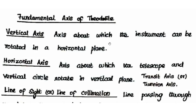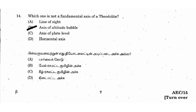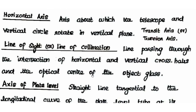The fundamental axes of a theodolite are: (1) Vertical axis — the axis about which the instrument rotates in the horizontal plane. (2) Horizontal axis — perpendicular to the vertical axis, the telescope rotates in the vertical plane about this. (3) Line of sight or line of collimation — an imaginary line passing through the intersection of crosshairs and the optical center of the objective glass.